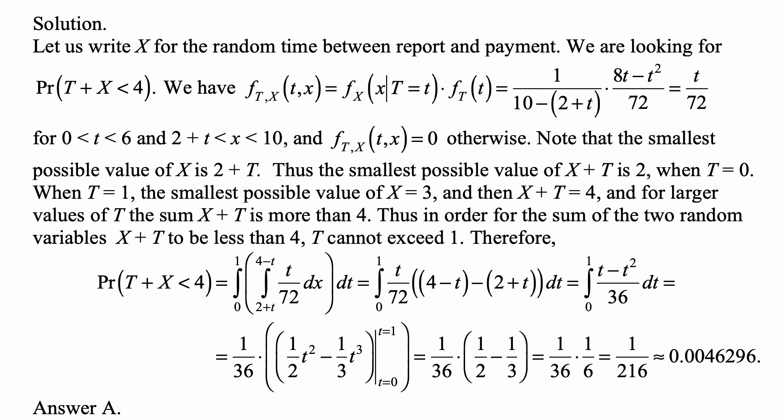Note that the smallest possible value of x is 2+t. Thus, the smallest possible value of x+t is 2, when t equals 0. Now, when t equals 1, the smallest possible value of x is 3.